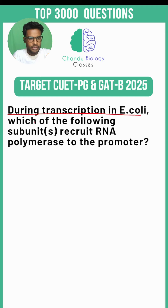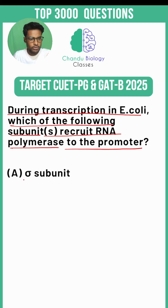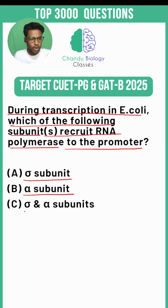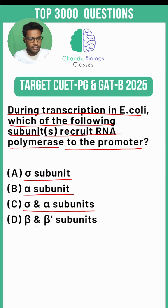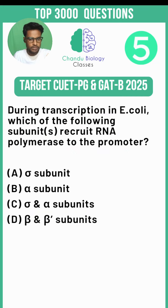During transcription in E. coli, which of the following subunit or subunits recruit RNA polymerase to the promoter? Option A, sigma subunit. Option B, alpha subunit. Option C, sigma and alpha subunits. Option D, beta and beta dash subunits.